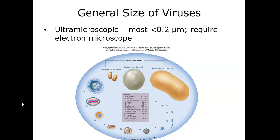The general size of viruses — they're ultramicroscopic. Most are less than about 0.2 micrometers in size, meaning that in order to visualize them we need to utilize the electron microscope. You cannot view viruses with a light microscope. This picture from your text details out that if we take something like an E. coli, which is about 2 micrometers long, a streptococcus, which is a common skin organism about 1 micrometer long, and then you start to get into the viruses starting at 800 nanometers.